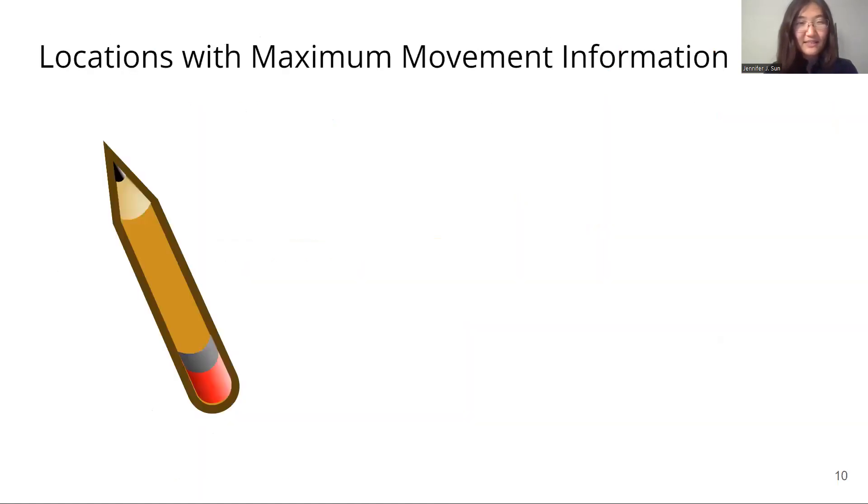Our method is based on the idea of discovering locations with maximum movement information. Let's look at a simple example. Given a rigid object, such as a pencil here, if we had two keypoints, we can reconstruct the new location and orientation using these keypoints alone.